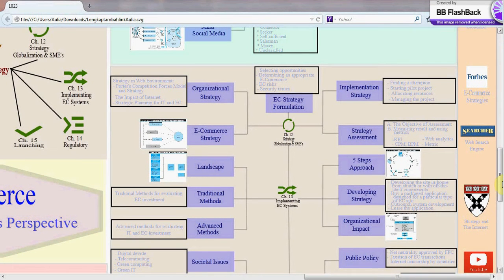Chapter 12 is about strategy, globalization, and SMEs of electronic commerce. It contains five subchapters: EC strategy formulation and organizational strategy, e-commerce strategy, implementation strategy, and strategy assessment.